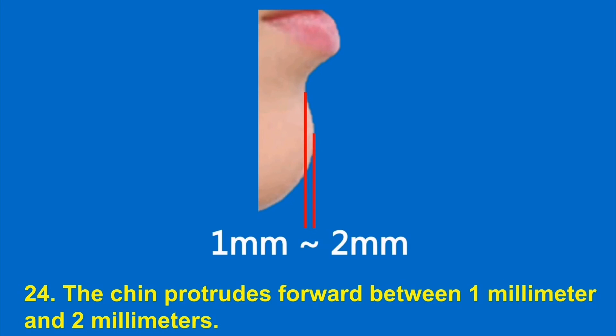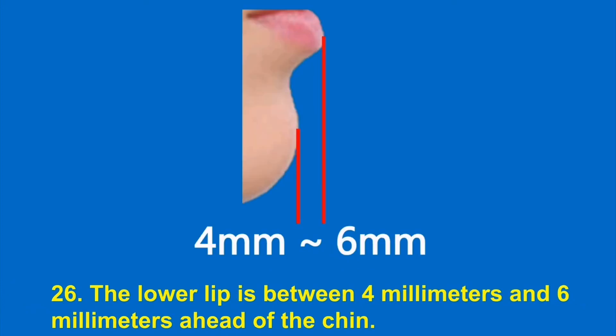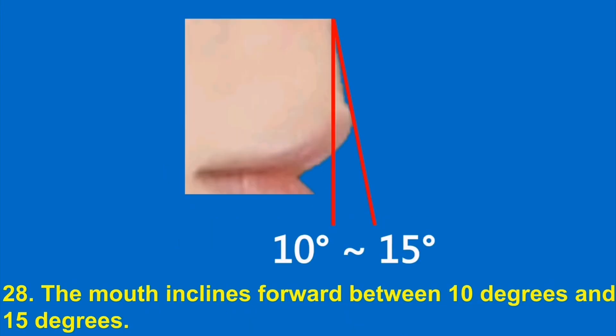24. The chin protrudes forward between 1 mm and 2 mm. 25. The chin is between 0 mm and 2 mm behind the forehead. 26. The lower lip is between 4 mm and 6 mm ahead of the chin. 27. The upper lip is between 2 mm and 4 mm ahead of the lower lip.